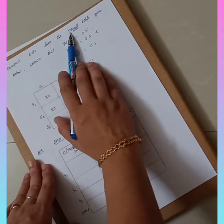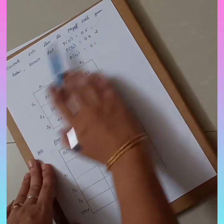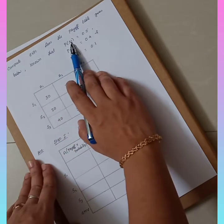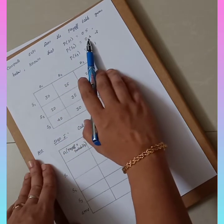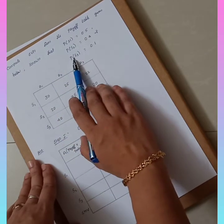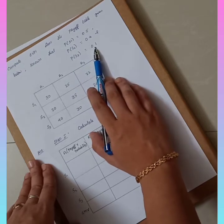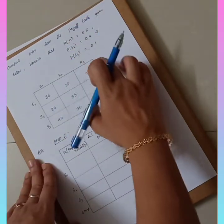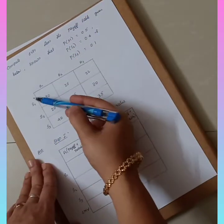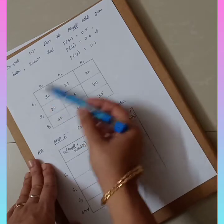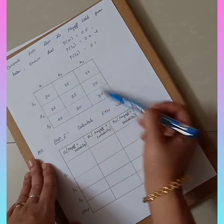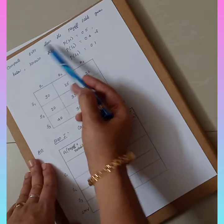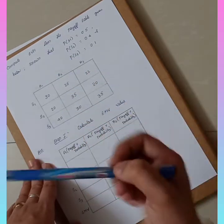Compute EVPI from the payoff table given below. The probability of S1 is 0.5, S2 is 0.4, and S3 is 0.1. All the probabilities of different states are given. You have a payoff table and you have to calculate the EVPI.